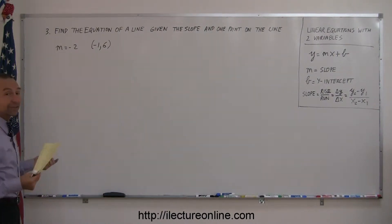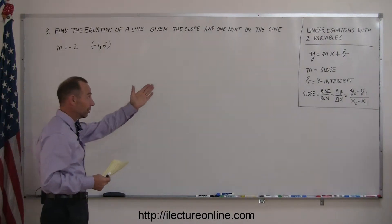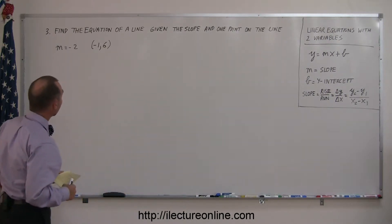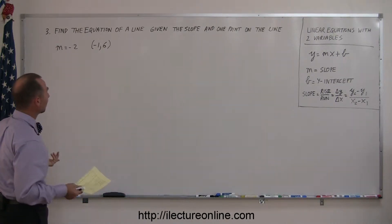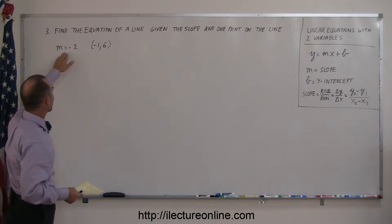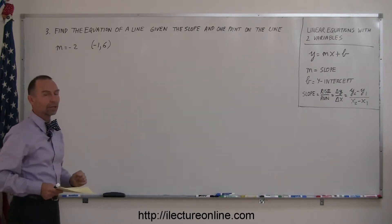Now we're dealing with a different kind of problem, still working with linear equations and two variables. Here they ask you to find the equation of a line given the slope and one point on the line. Here's the slope, m equals negative 2, and there's a point on the line.